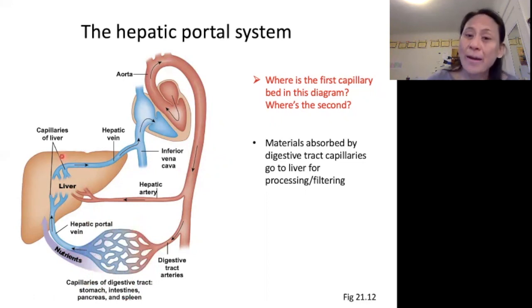So that is our hepatic portal system and what is being indicated here is that all of these materials that we are absorbing in the digestive tract are going to go to the liver before they go back to the heart and out to the rest of the body. The point of doing this is so that the liver can kind of have first dibs on processing these molecules that we have absorbed in the digestive tract.